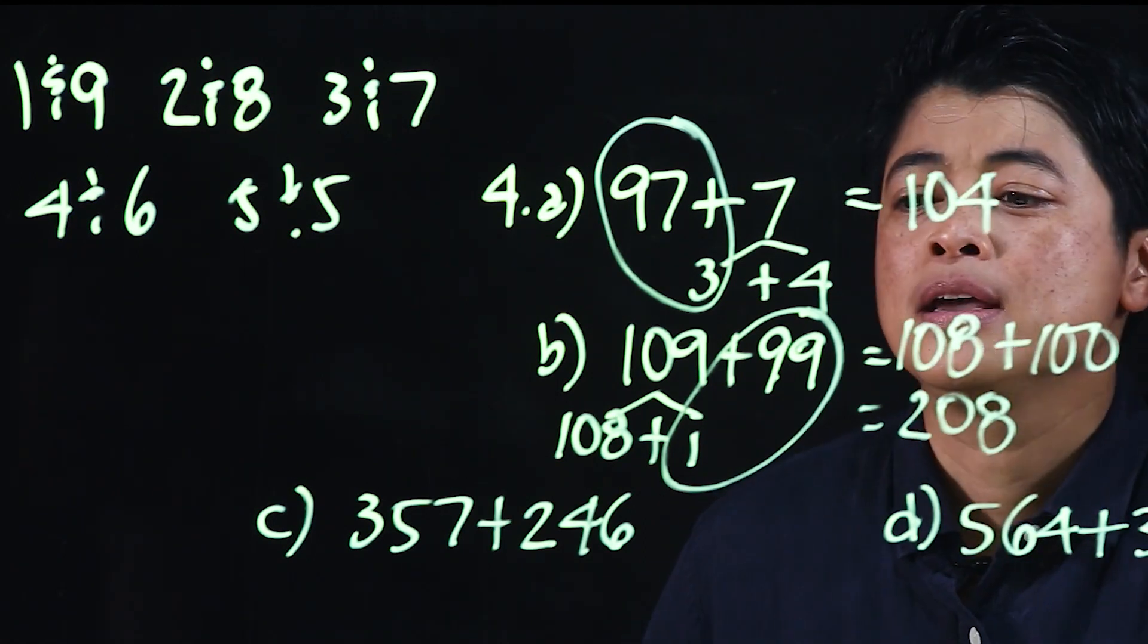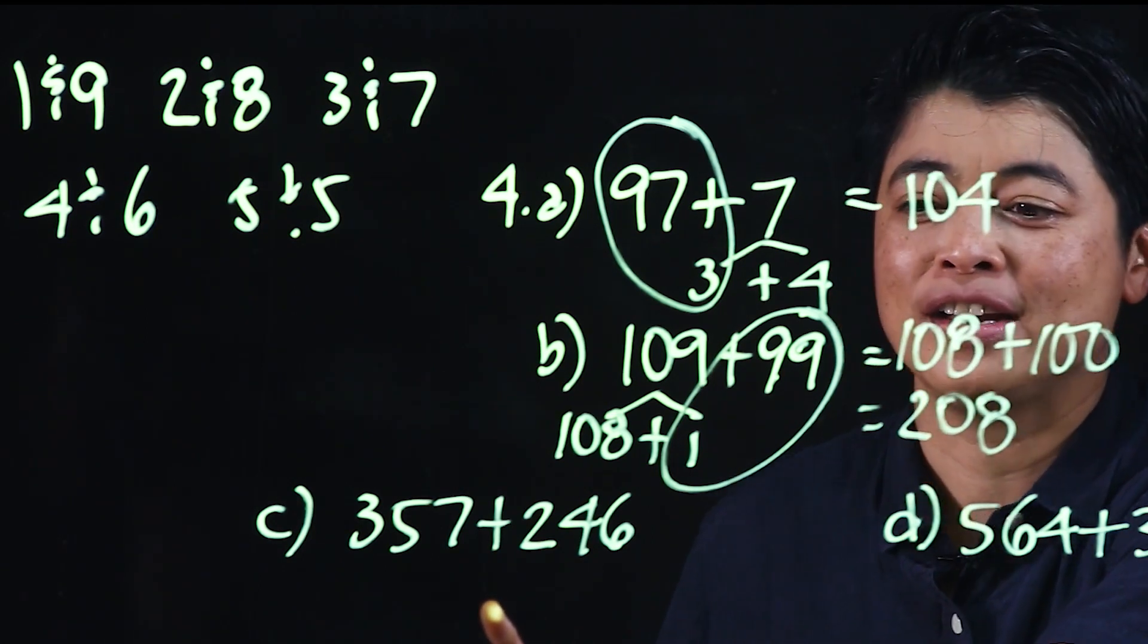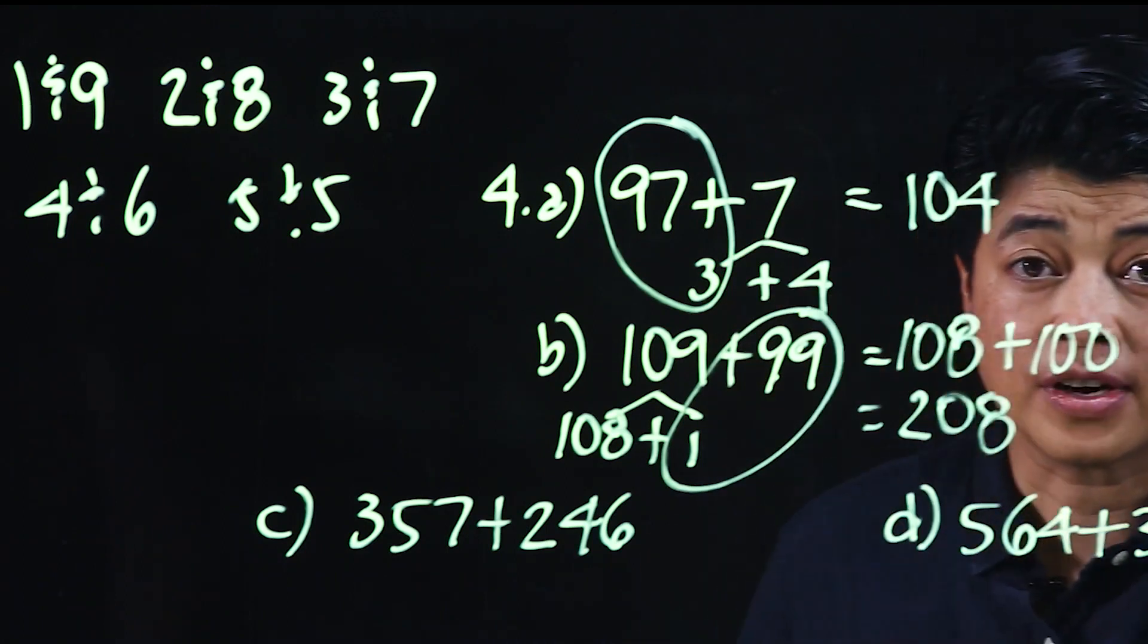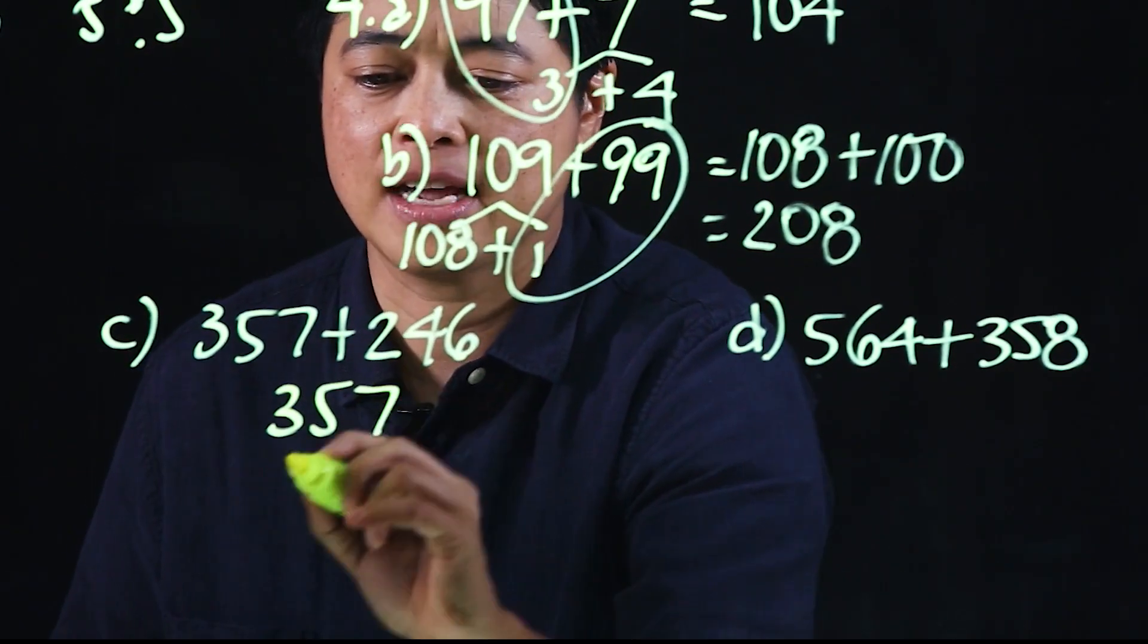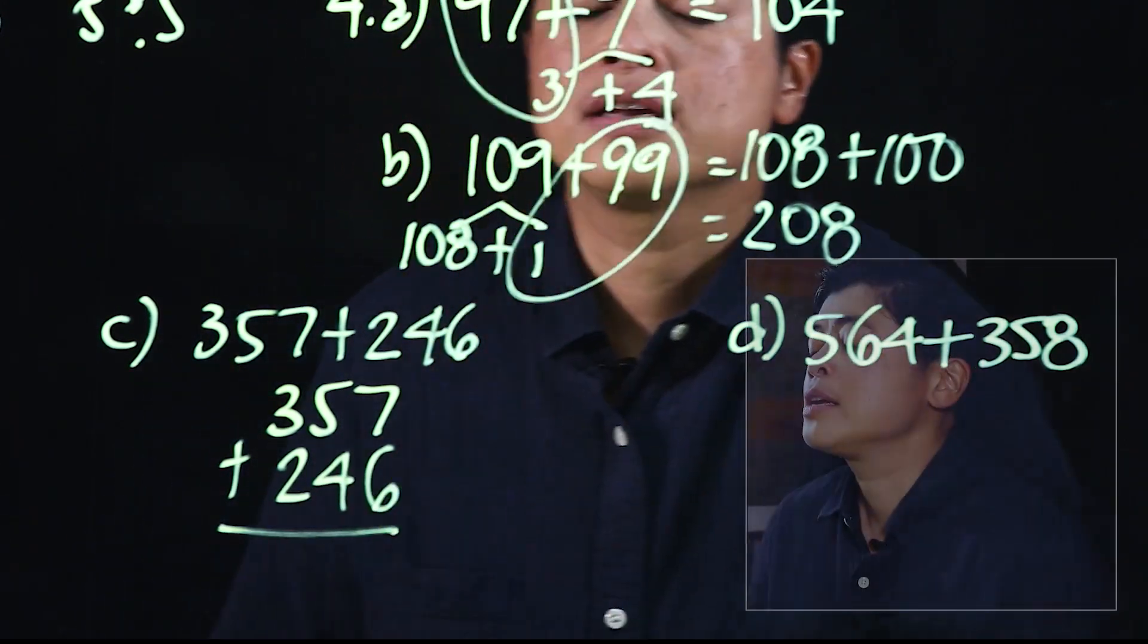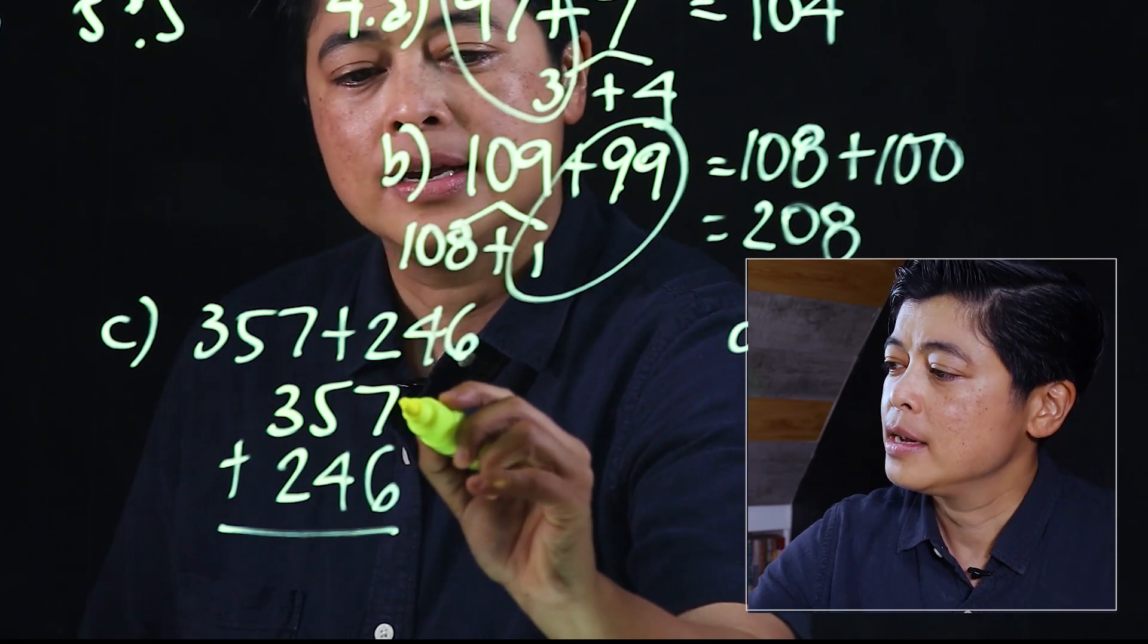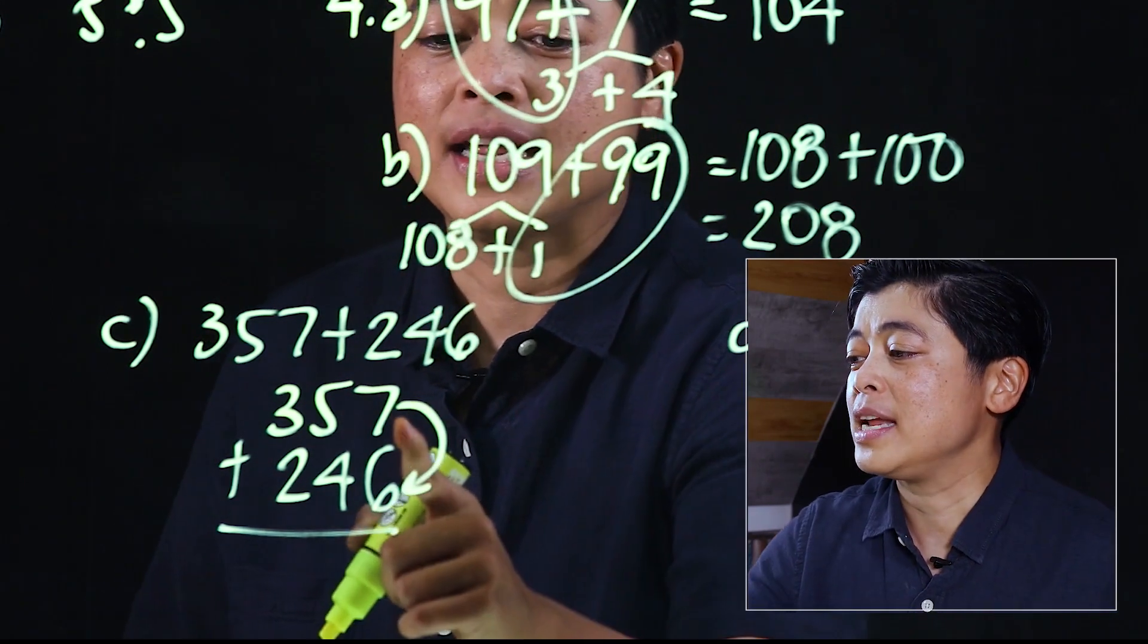This on the other hand is computational addition. Therefore we need to write it vertically, the bigger number on top: 357 plus 246. So the regrouping will be 7 plus 6, that means I need 3 to make 10.